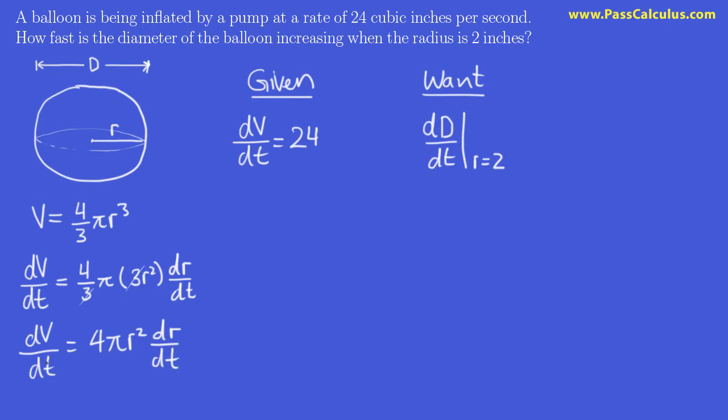So we can rewrite this as dV/dt equals 4 pi r squared dr/dt. But dV/dt is a constant, it's just 24. So we get 24 equals 4 pi r squared dr/dt. Let's solve for dr/dt. dr/dt will be 24 over 4 pi r squared. Simplifying, we get dr/dt is 6 over pi r squared.